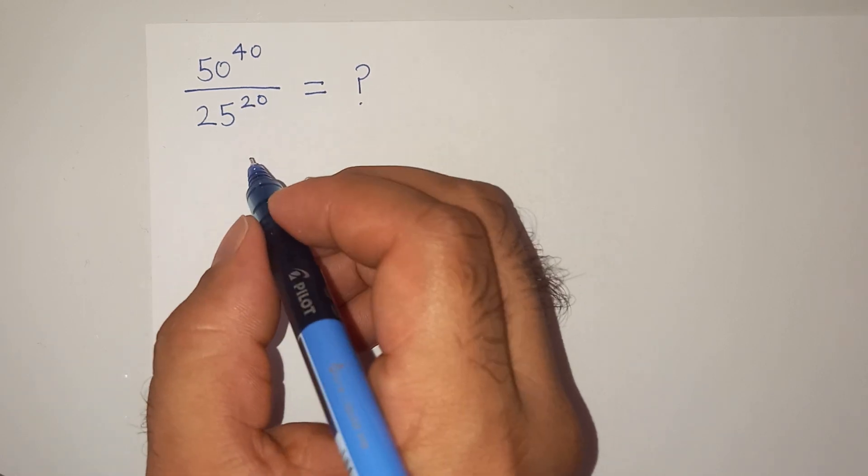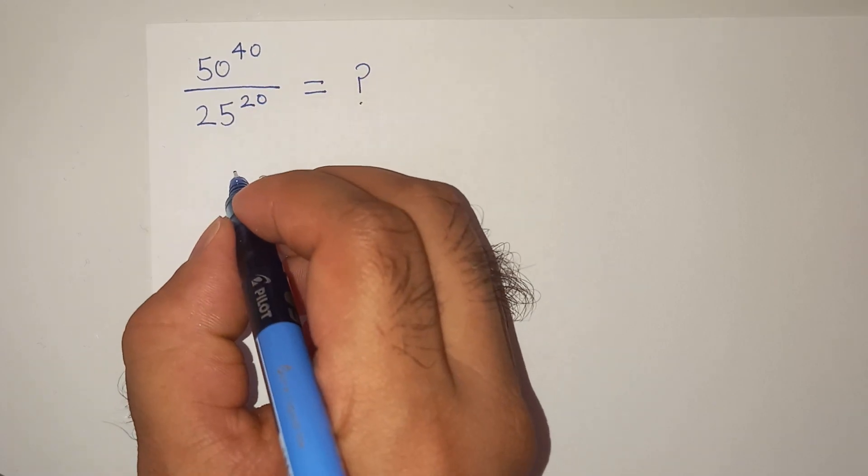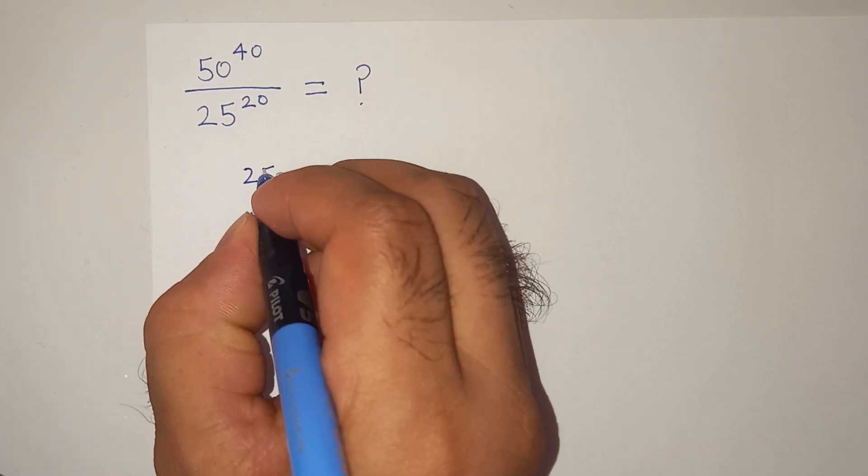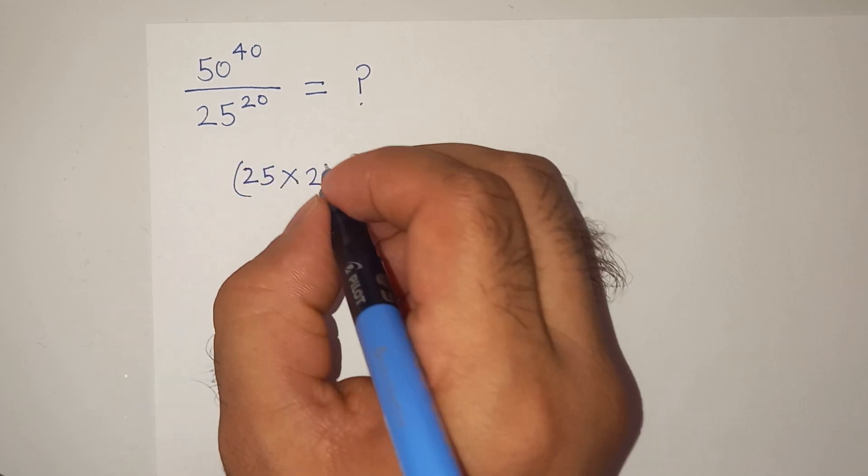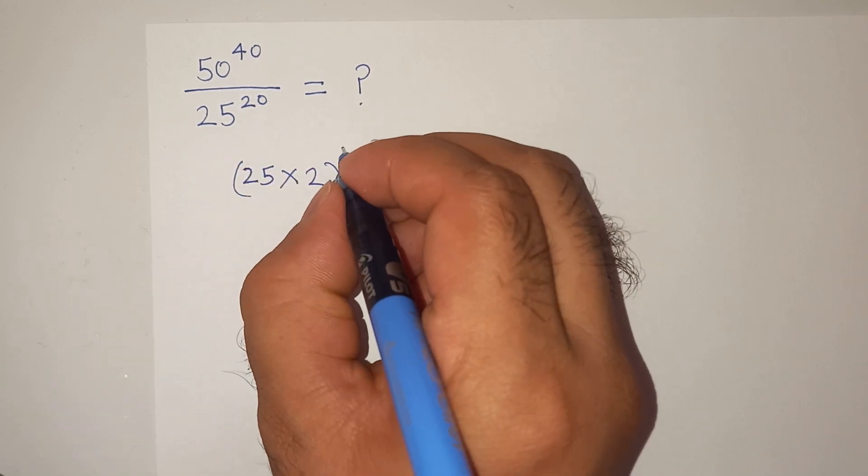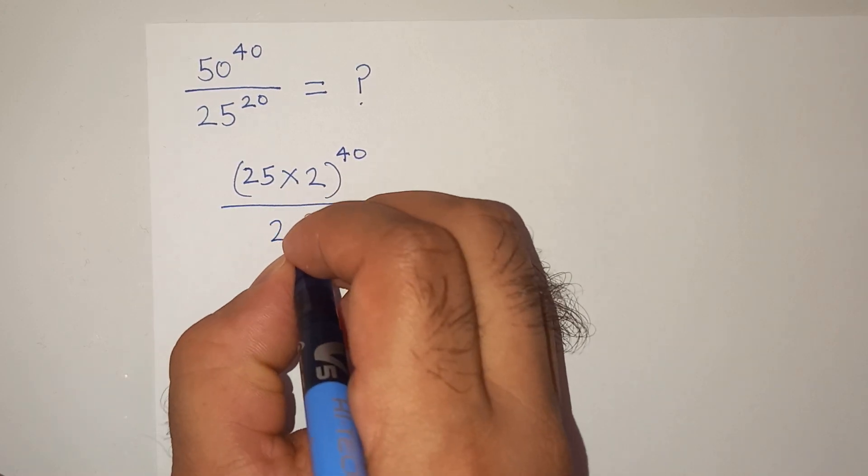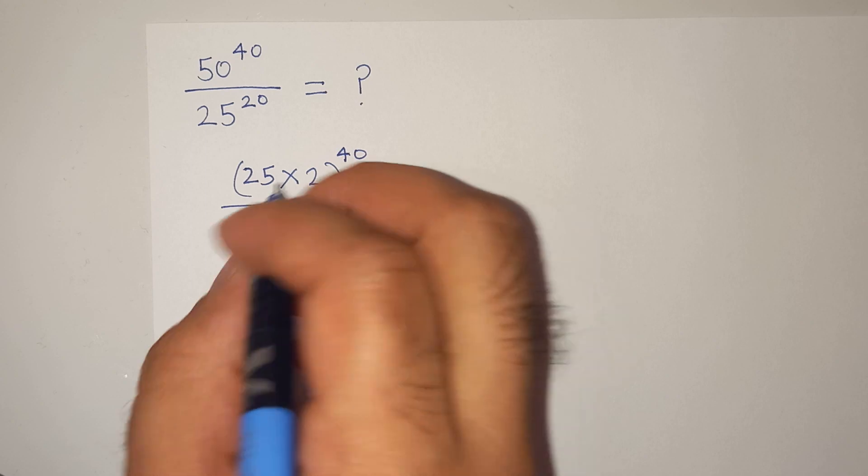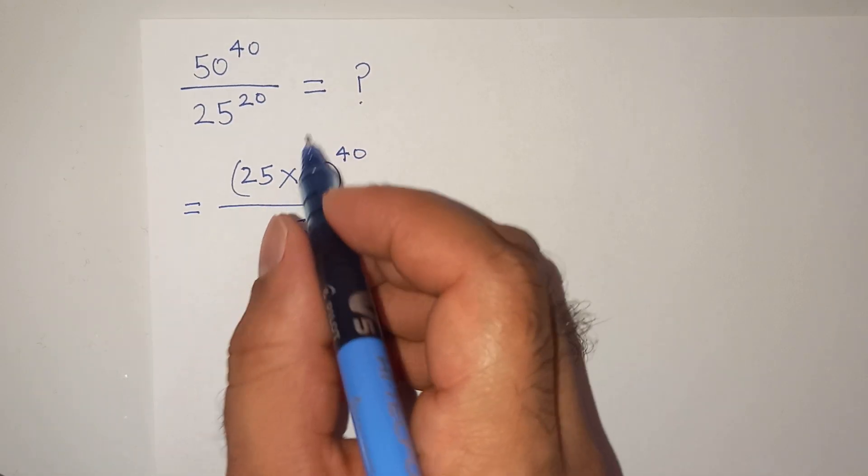All right, so I can write this numerator 50 as 25 multiplied by 2 power 40 divided by 25 power 20. Right, because 25 multiplied by 2 is 50.